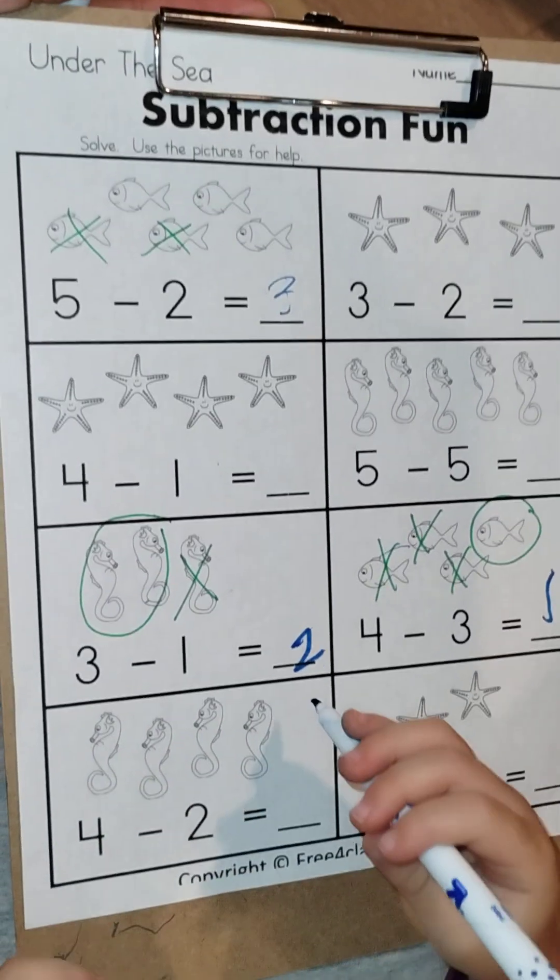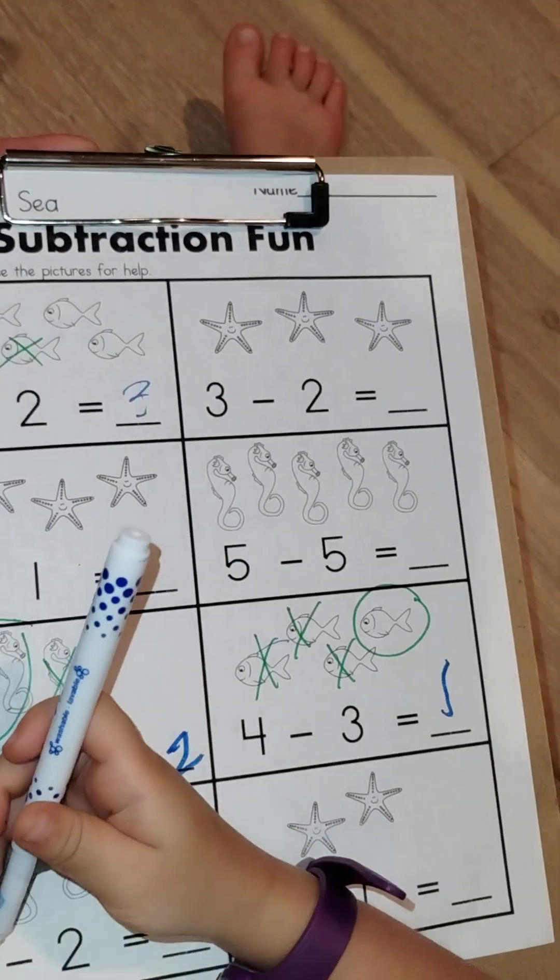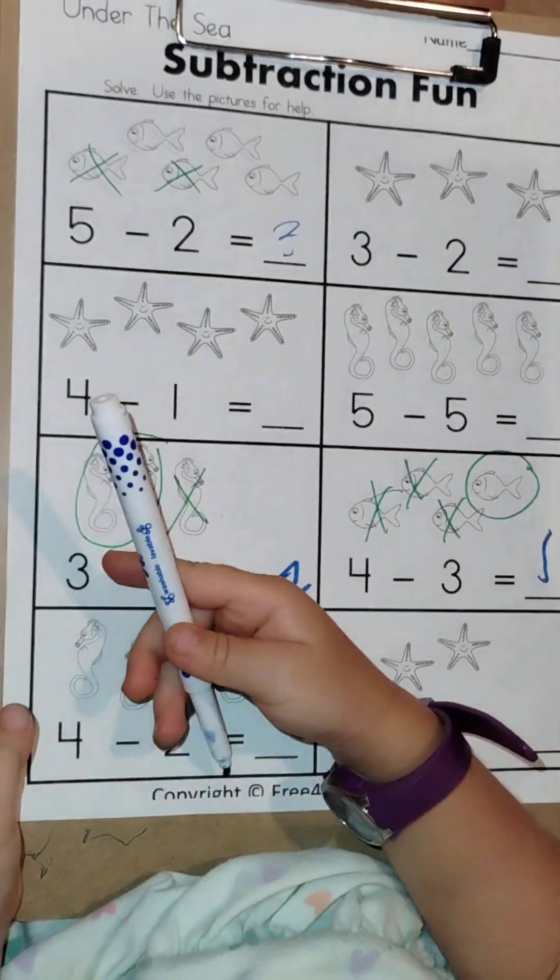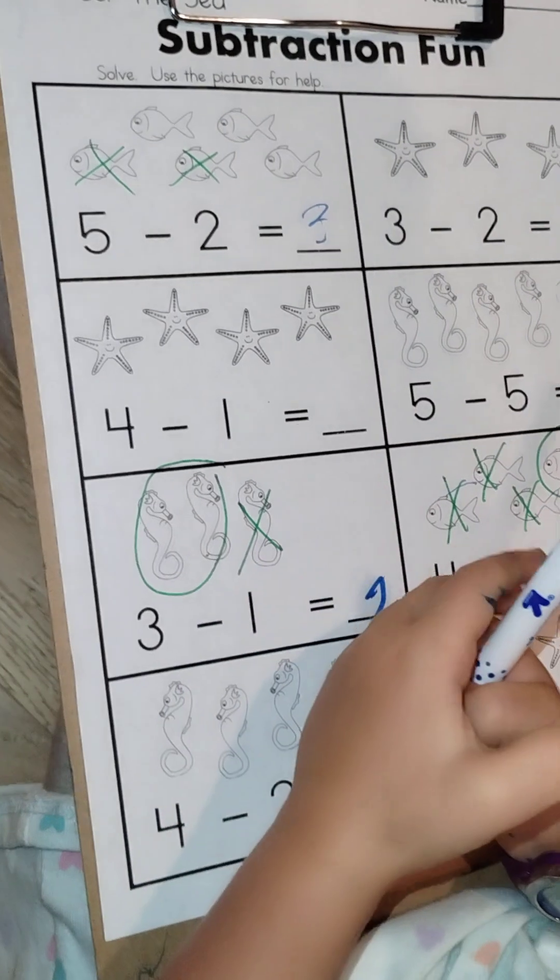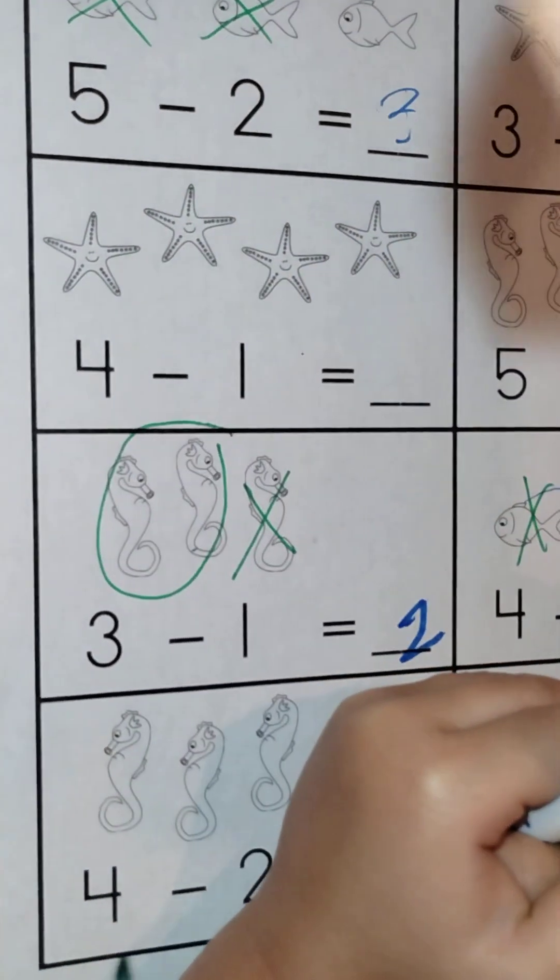All right, we've already started this subtraction worksheet, so let's finish. Four minus two equals what number? Four minus two equals what number? All right, let's go ahead and mark it out.